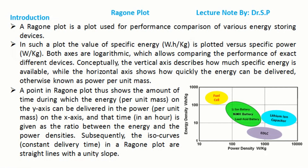Conceptually, the vertical axis describes how much specific energy is available, while the horizontal axis shows how quickly the energy can be delivered, otherwise known as power per unit mass. A point in the Ragone plot thus shows the amount of time during which the energy on the y-axis can be delivered at the power on the x-axis, and that time is given as the ratio between the energy and the power densities.